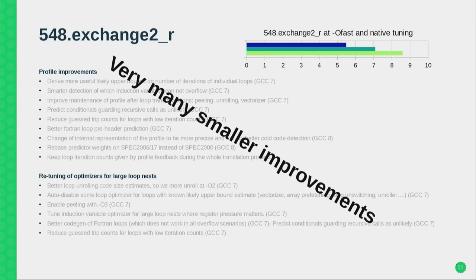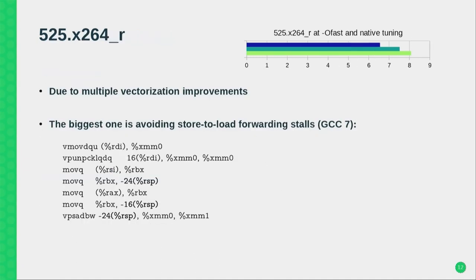The main two areas improved were: profile estimates — even without measuring actual runtime profiles, the compiler makes profile estimates, and those were improved in their propagation and behavior — and the optimizers were retuned for these large loop nests. That's how performance was recovered for Exchange2.